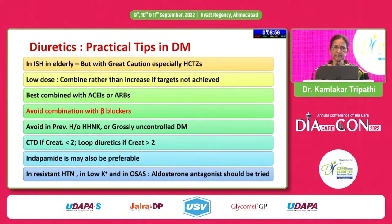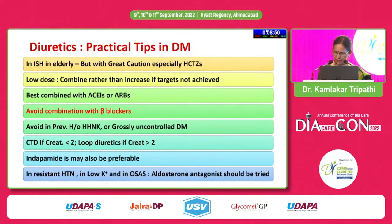In resistant hypertension, in low potassium, and in OSAS, aldosterone antagonism should be tried.